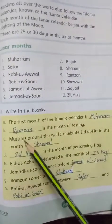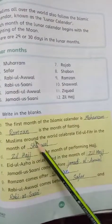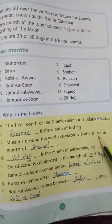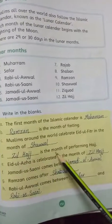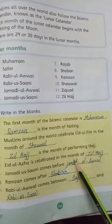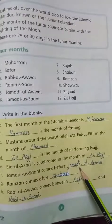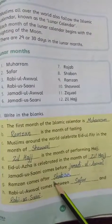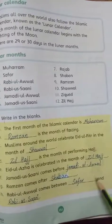Now we must fill in the blanks. The first month of the Islamic calendar is Muharram. Ramzan is the month of fasting. Muslims around the world celebrate Eid-ul-Fitr in the month of Shawal. Zilhaj is the month of performing Hajj. Next, Eid-ul-Azha is celebrated in the month of Zilhaj. Jamadi-us-Sani comes before Jamadi-ul-Awal. Ramzan comes after Shaban. Rabi-ul-Awal comes between Safar and Rabi-us-Sani.